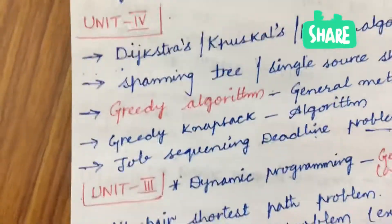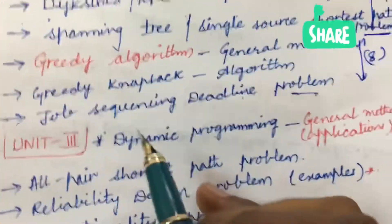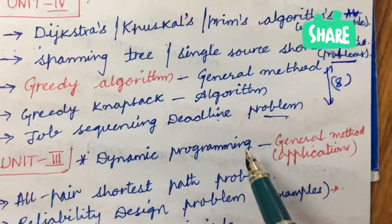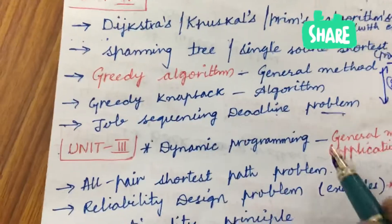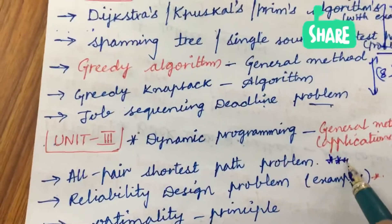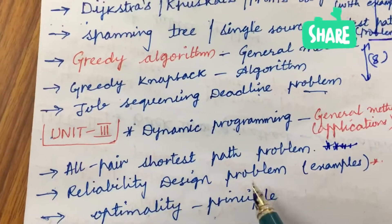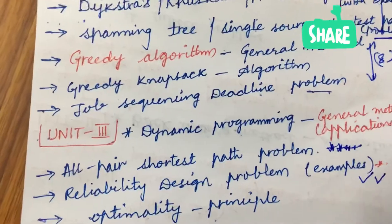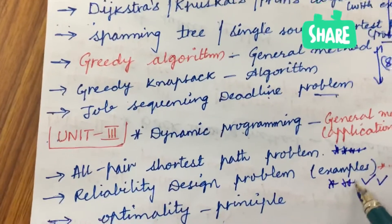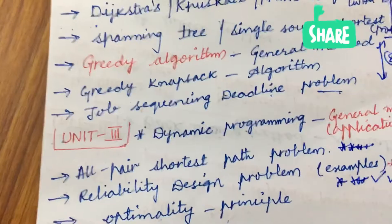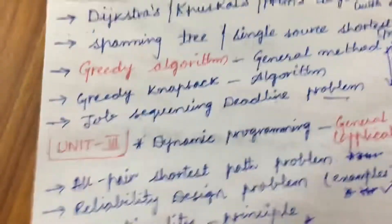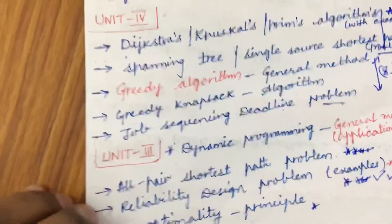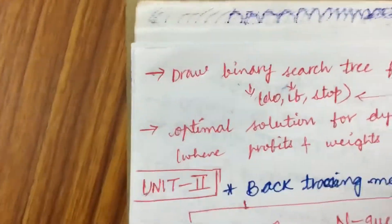Make sure to write your exam neatly and carry your pens and pencils to the examination. The third unit is all about Dynamic Programming — its general method and applications — as well as the All-Pairs Shortest Path problem, which is one of the very very important questions, dear students. Reliability Design problem is asked many times and we can expect this to be a gunshot question from Unit 3, and Optimality Principle is also asked for 7 marks. Make sure to work out whichever points I am highlighting here so that you will be getting better marks in your final examination.